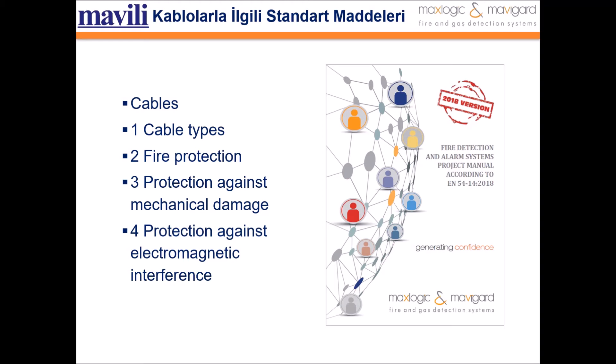Appropriate protection will be provided so that they can operate for 30 minutes. This can be achieved in one of the following ways: using cables with a PH30 performance as specified in EN standards, or protecting the cables with a fire-resistant structure designed to ensure the performance of EI-30.